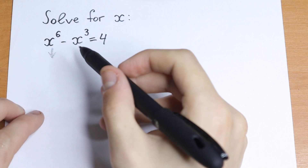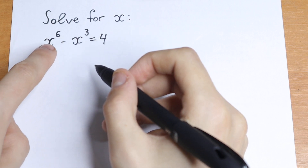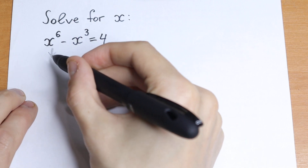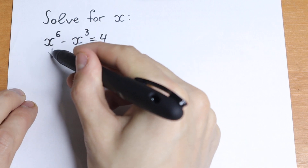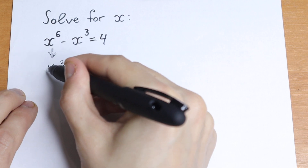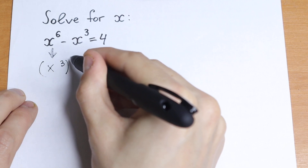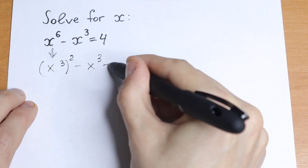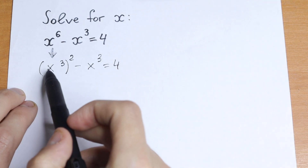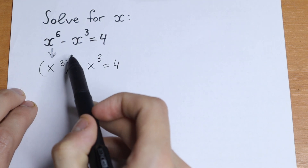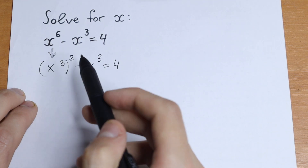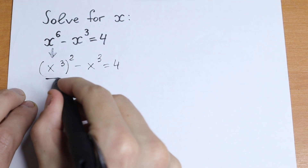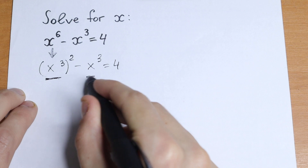I want to suggest a really good trick to solve this equation. We can write x to the sixth power as x cubed to the second power, and minus x cubed equals 4. So x to the sixth power is written as x cubed squared. We have x cubed here and x cubed, so we can use a substitution.